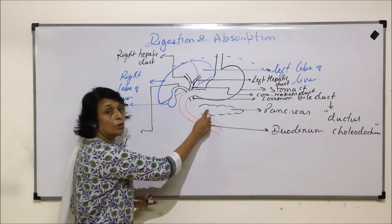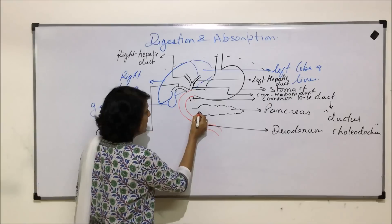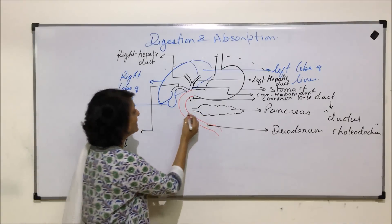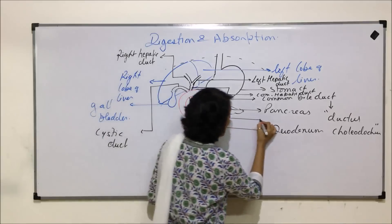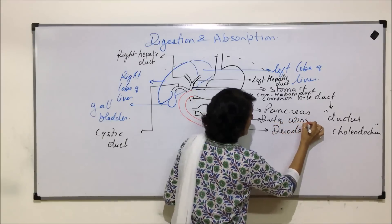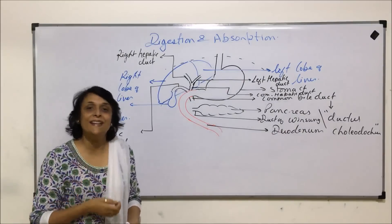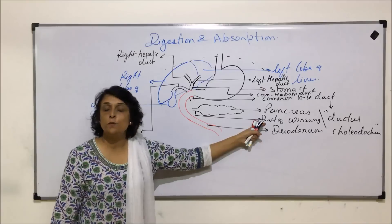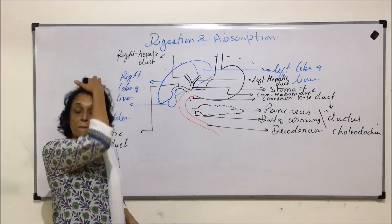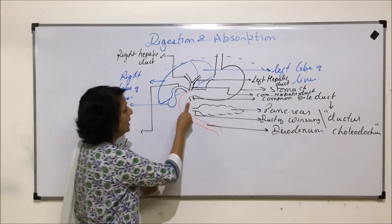Now let us come to the duct coming from the pancreas. The pancreas pours pancreatic juice through a duct, and this duct is known as the duct of Wirsung. This is the common name — the main pancreatic duct. Questions are invariably asked using the name duct of Wirsung, so it is important to remember that name.